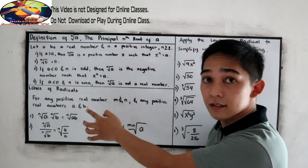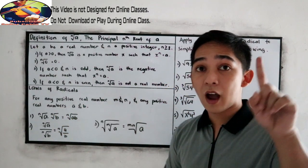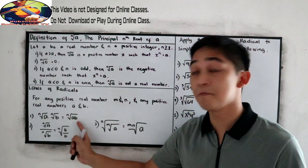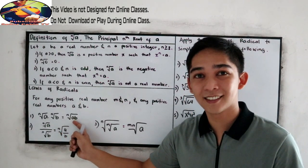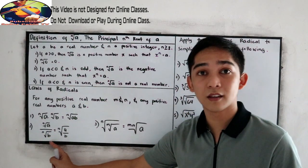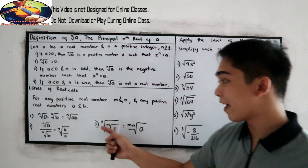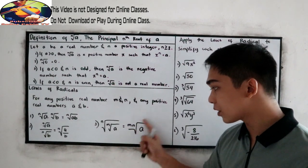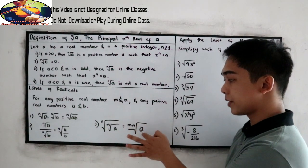And we have the laws of radicals. For any positive integers M and N, and any positive real numbers A and B: Law 1 — nth root of A times nth root of B equals nth root of AB. Since we have the same index, just multiply the radicands A times B. Law 2 (quotient) — nth root of A over nth root of B equals nth root of A over B, same index N. Law 3 — nth root of the M root of A equals the MN root of A. Just combine the indices N times M to get MN, and keep the radicand.